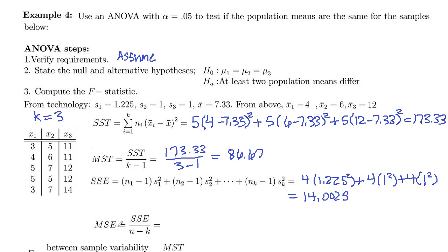And then mean square error is SSE, our 14.0025 divided by N minus K. N is 15, and K is 3. So that's 1.167 to three decimal places.